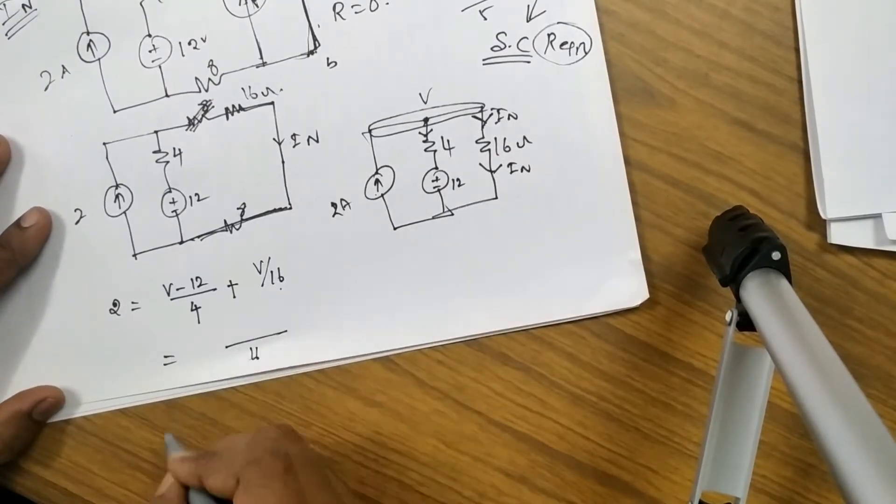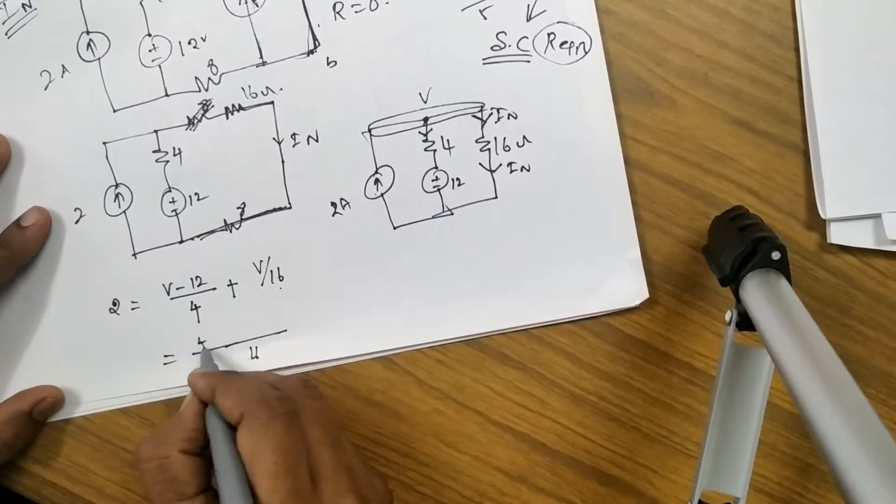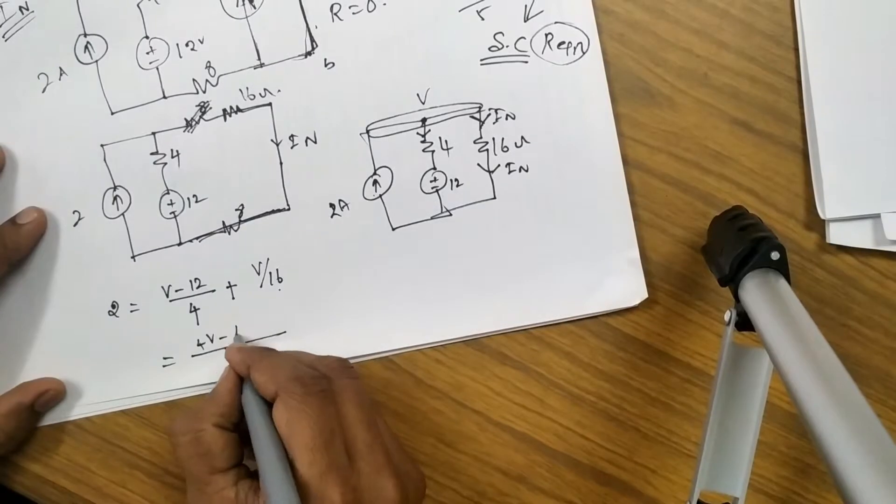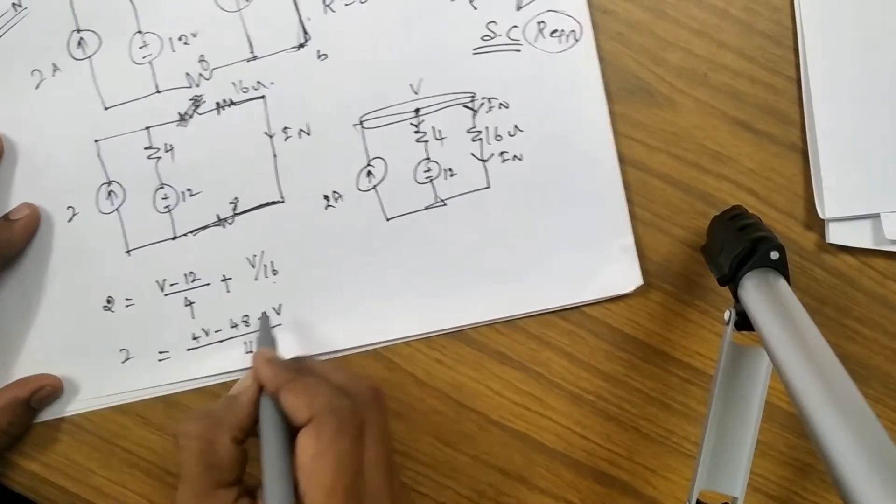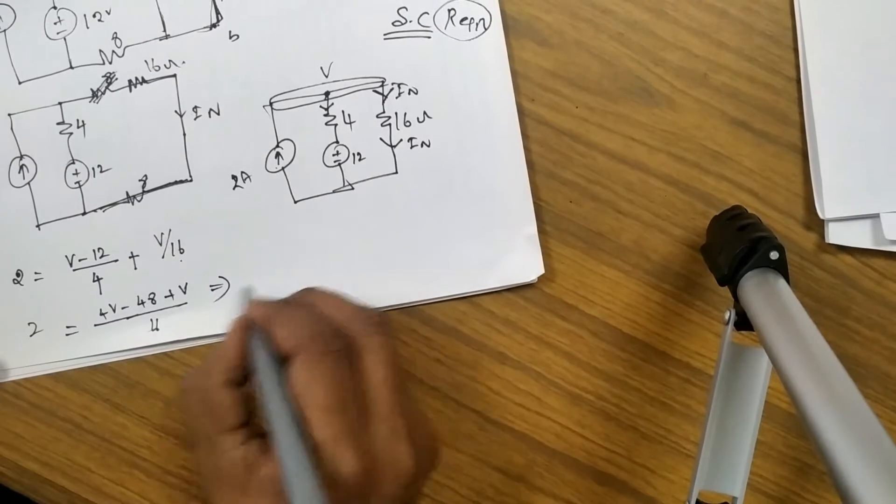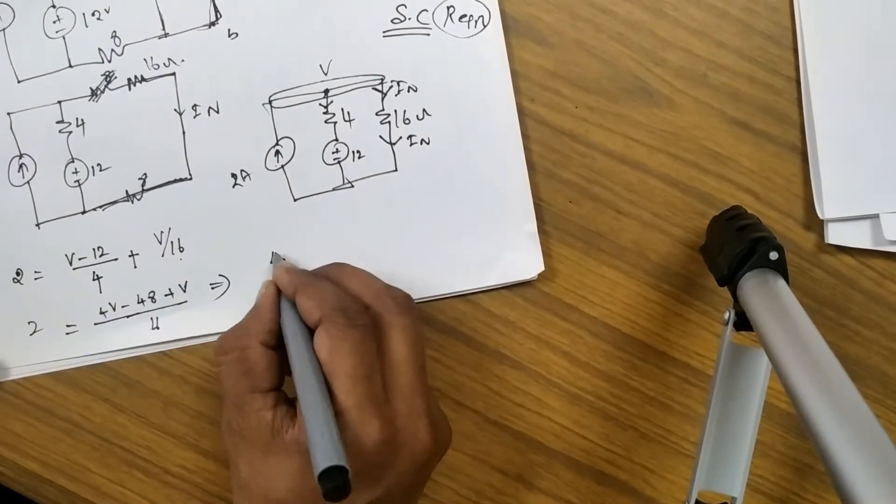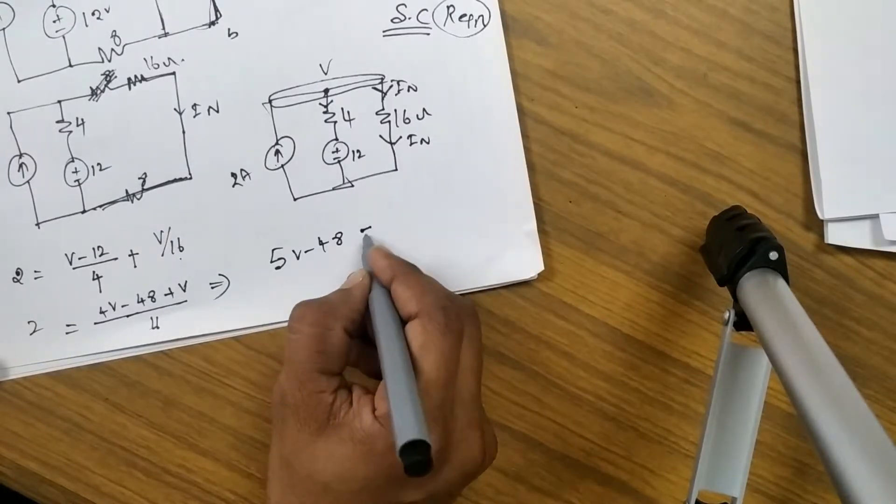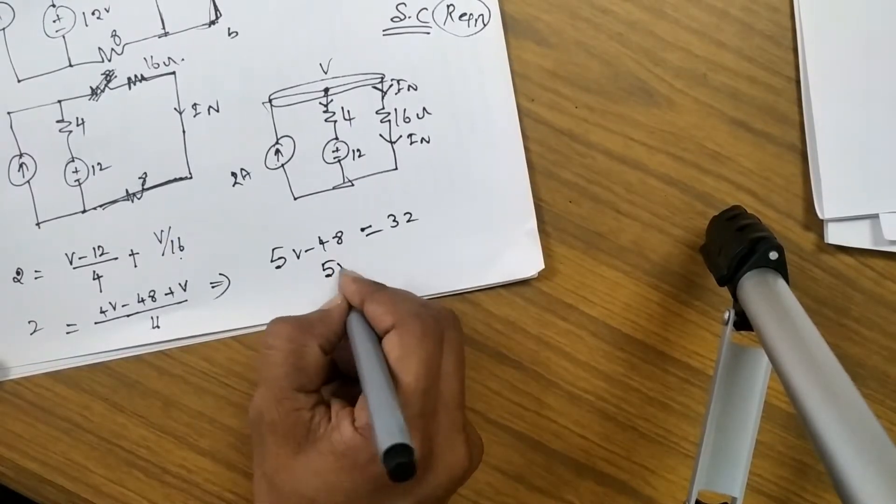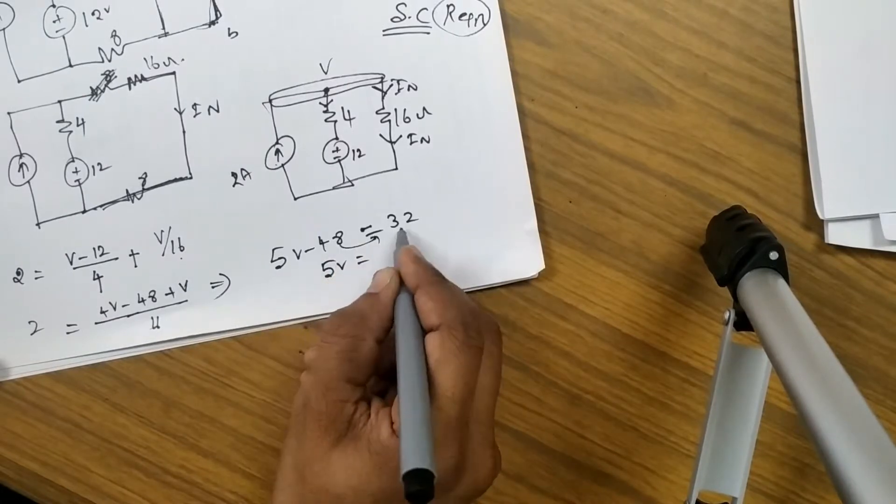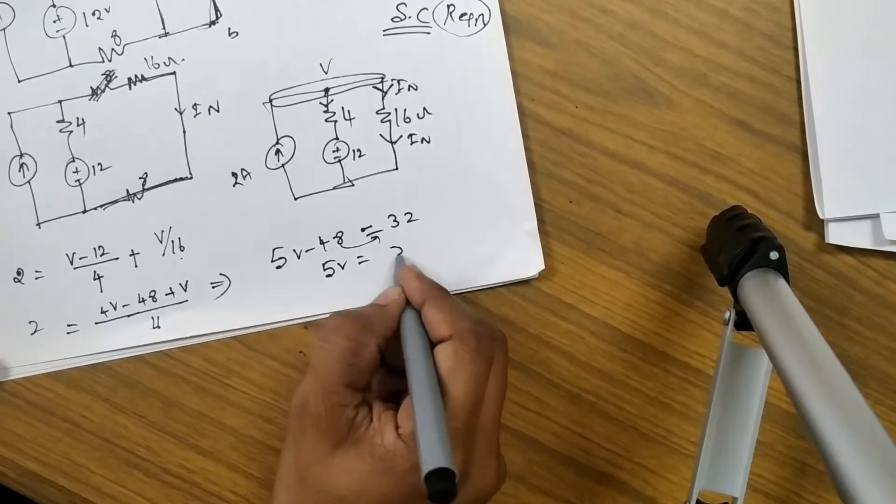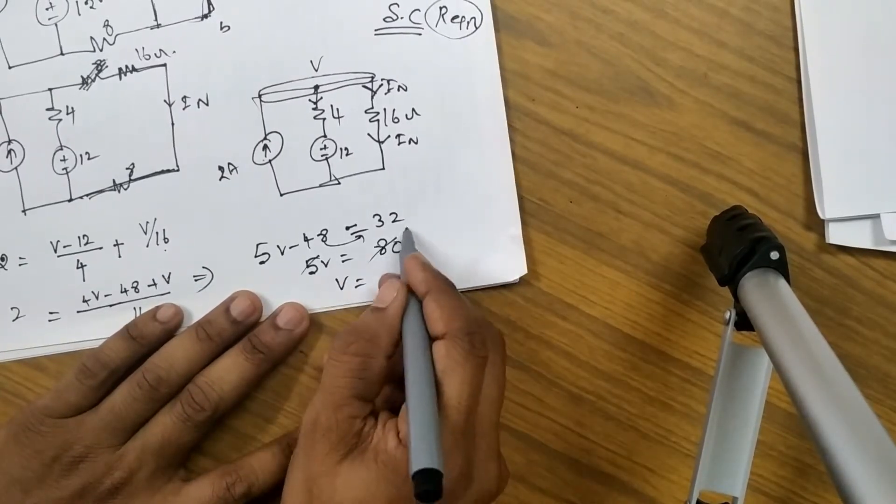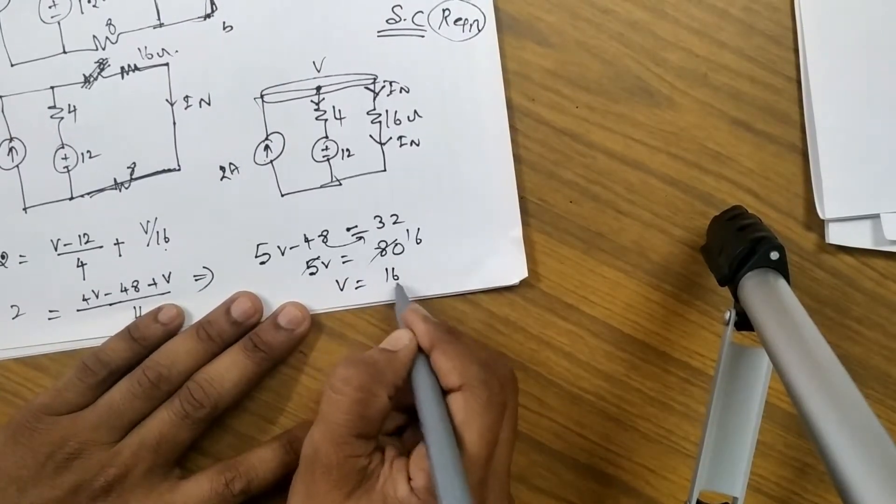So 16 would be the LCM for this, you will get 4V minus 12 into 4, 48 plus V equal to 2. This will give you 5V minus 48 equal to 32, then 5V minus 48, then V is equal to 16V.